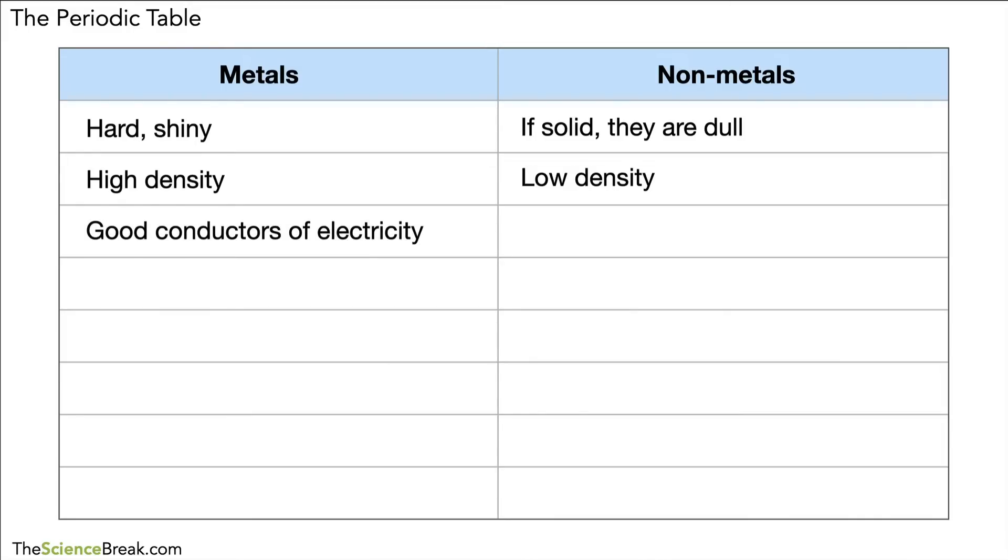Metals are good conductors of electricity. Non-metals are poor conductors of electricity; they are insulators. Metals are also good conductors of heat energy, and again, non-metals are poor conductors of heat energy; they are also insulators.